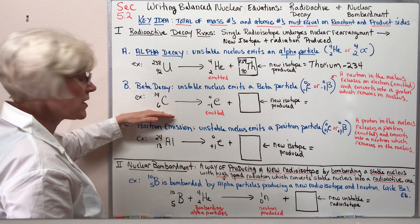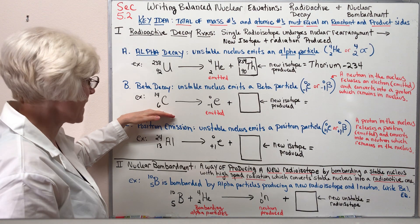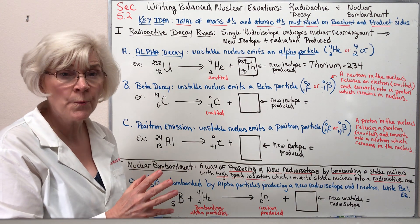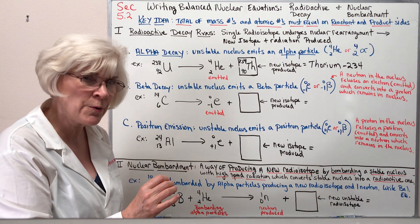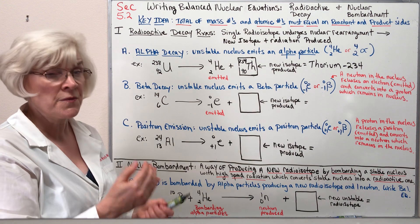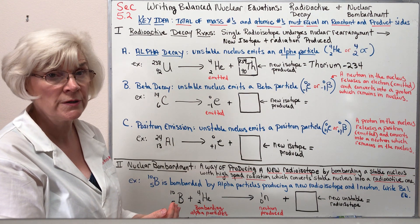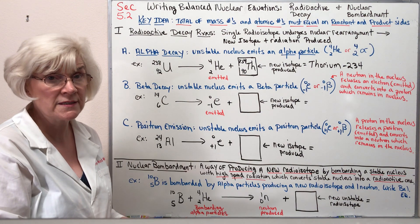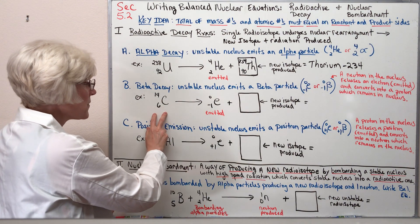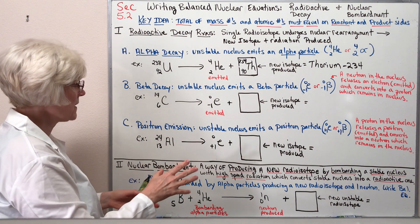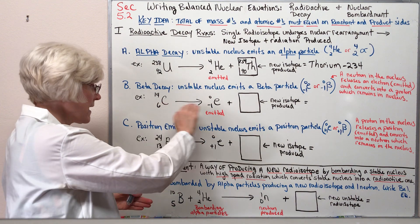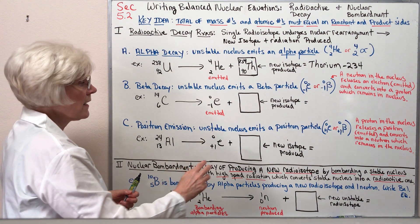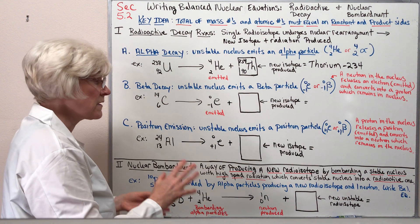Here's an example of a radioisotope that undergoes beta decay or beta emission: carbon-14 is a beta emitter. You would need to be told that carbon-14 is a beta emitter, but if told, you should be able to write the balanced equation for it. Here is our single reactant, carbon-14, all by itself spontaneously undergoing nuclear rearrangement, emitting a beta particle from its nucleus produced from a neutron that converts into a proton.